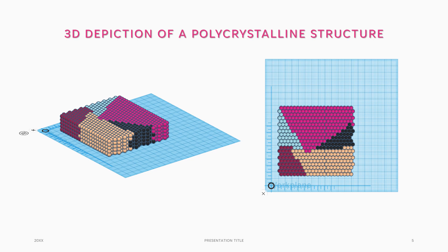Here is a 3D depiction of a polycrystalline structure that I made in Tinkercad. As you can see, we have grain boundaries across all the colors — each color represents a different grain. These all grew from single nuclei until they impinged on each other and created this polycrystalline material.